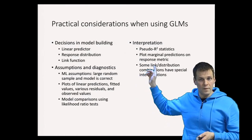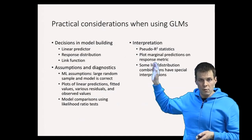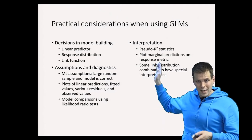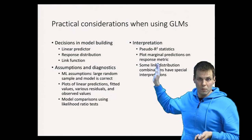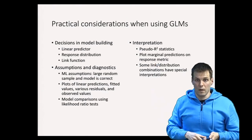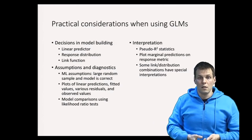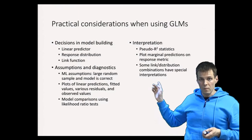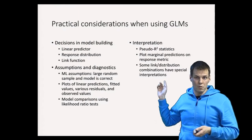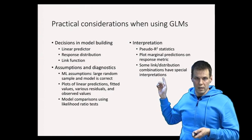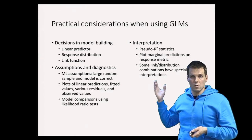It's very important to plot your data. Interpreting odds ratios can be difficult to explain to readers, whereas showing a plot of predicted probability as a function of age, for example, is much easier to understand. Some link and distribution combinations have special interpretations, such as odds ratios in logistic regression or incidence rate ratios in Poisson regression.